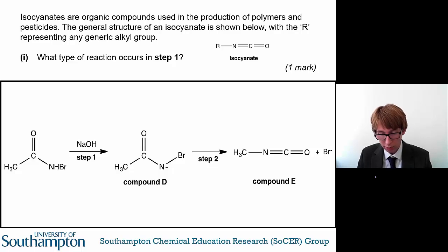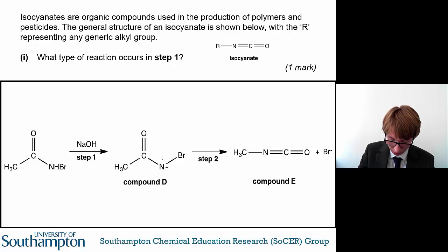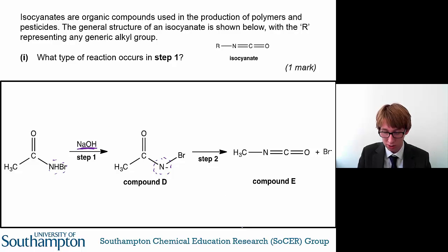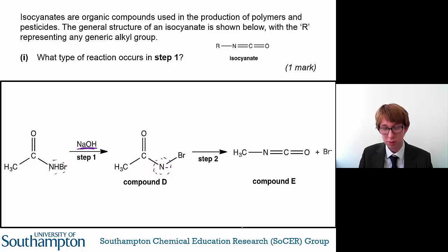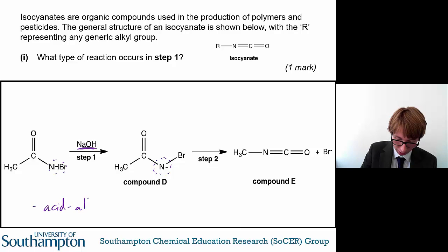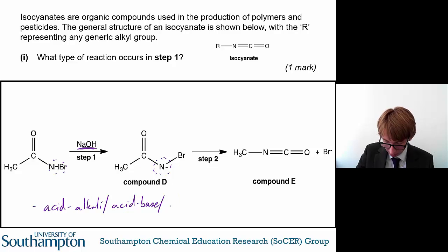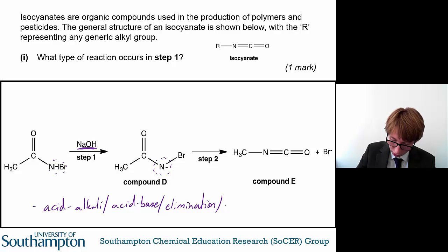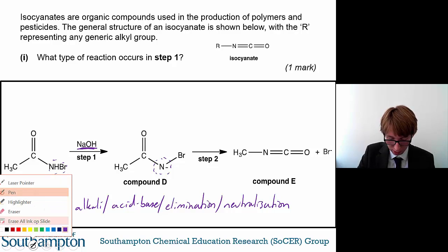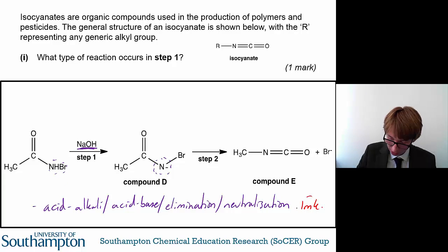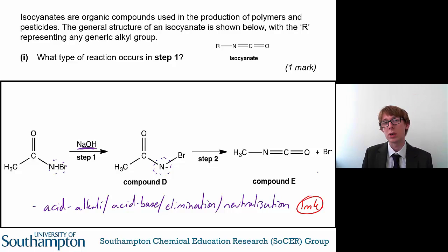The first question asks: what type of reaction occurs in step one? You can see in step one, all that's happened is that a proton has been lost, and you have reacted it with sodium hydroxide. Sodium hydroxide is a base and you've lost a proton, so the base has removed a proton. This is a simple acid-alkali, acid-base, elimination, or neutralization reaction — any of those four options would get you the marks.